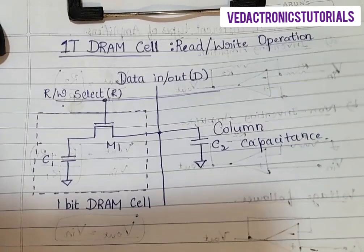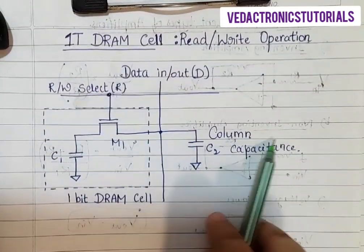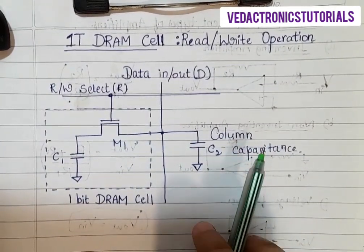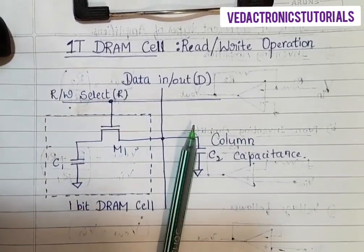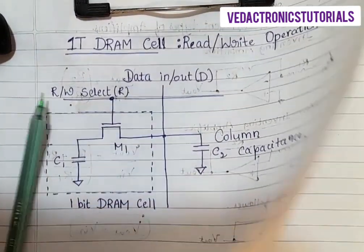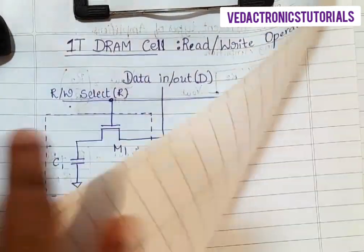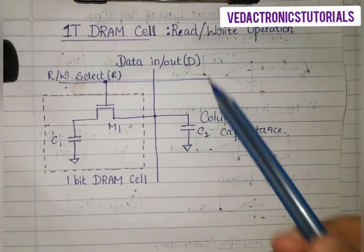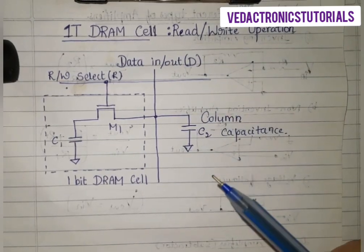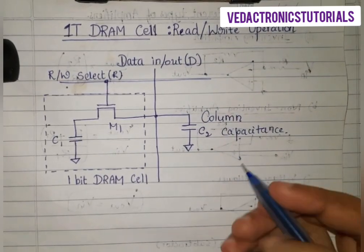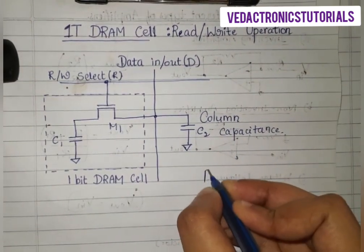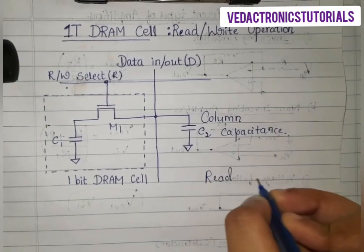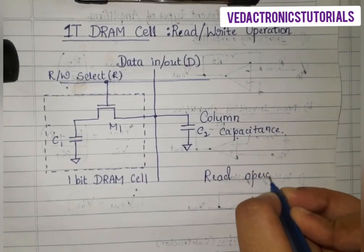The access transistor M1 turns on, allowing the storage capacitor C1 to charge up to the logic high level. For the write 0 operation, the bit line D is pulled to logic 0 and the word line is pulled high by the row address decoder.